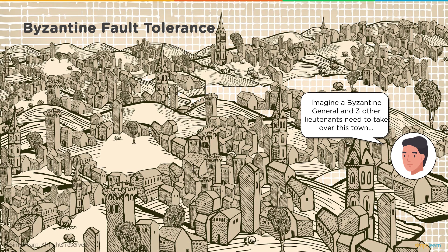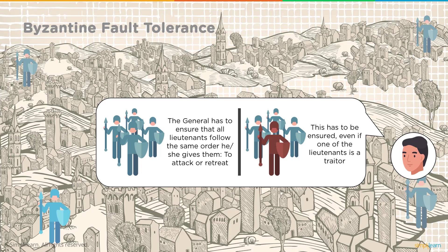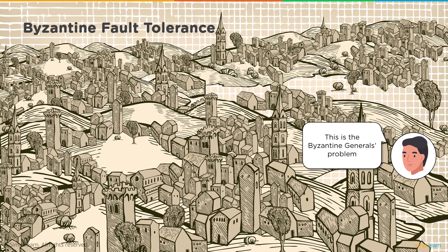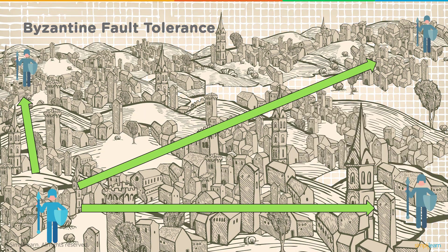Imagine a Byzantine general and three lieutenants who need to take over a town. They are at different places and can't directly communicate with each other. The general must ensure that all lieutenants follow the same order — either to attack or to retreat — even if one of the lieutenants is a traitor. This is the Byzantine general's problem: how does the general communicate the correct decision to all lieutenants, regardless of whether someone is a traitor?